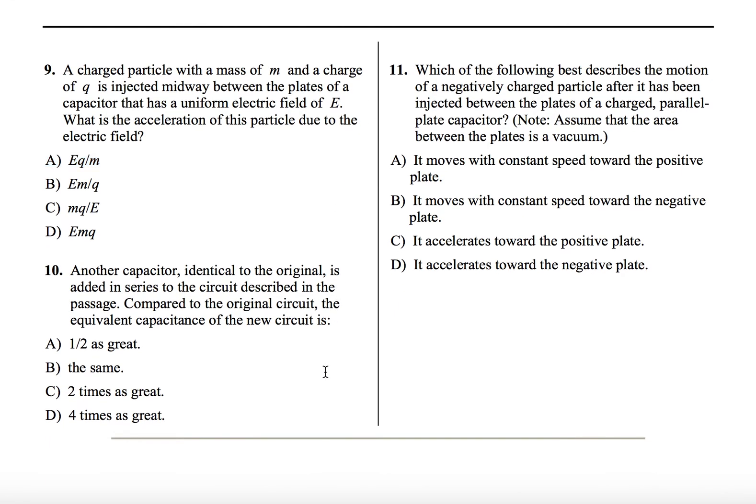Number ten. Another capacitor identical to the original is added in series to the circuit described in the passage. Compared to the original circuit, the equivalent capacitance of the new circuit is what? So now we have to go back to, again, our equations. And we have to remember how equivalent capacitance is calculated given putting them in series. So remember, in series, it's as if we're increasing the distance. If we're adding another capacitor, it's like we're increasing the distance of one capacitor. And we know that decreases the capacitance. So now we know that we have to go to the equation with the inverse relationship.